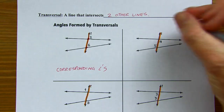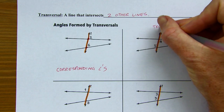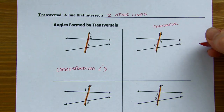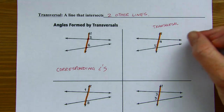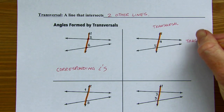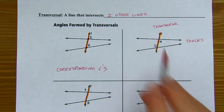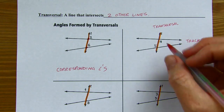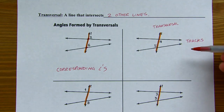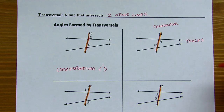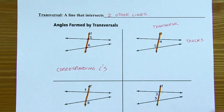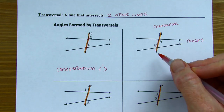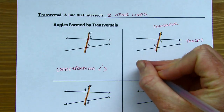The other two lines that are not transversals — I call them tracks, like train tracks. Looking at angles 4 and 5, they're on the inside of the tracks, or the interior of the tracks. They're both on the inside, and when you look at the transversal, they're on different sides — alternate sides — of the transversal. So this pair is called alternate interior angles.